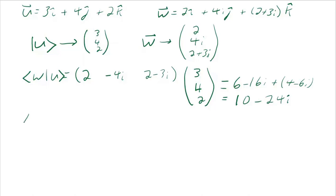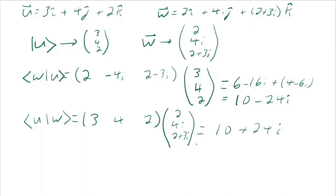What if I did the inner product of U with W? See now it's all real numbers here, 3, 4, 2. The very first part of the braket needs to be a row vector. Because you multiply a row vector by a column vector. And it needs to be complex conjugated. What it really is, is the complex transpose, otherwise known as a Hermitian adjoint. And you work that out, you'll get 10 plus 24i. It won't be the same thing.